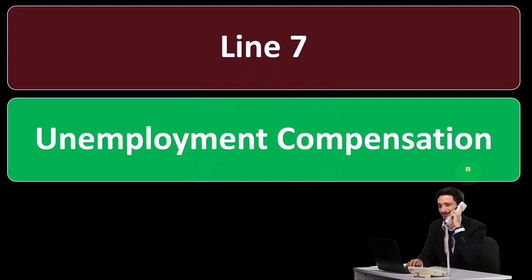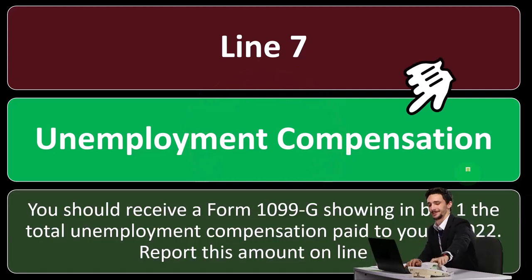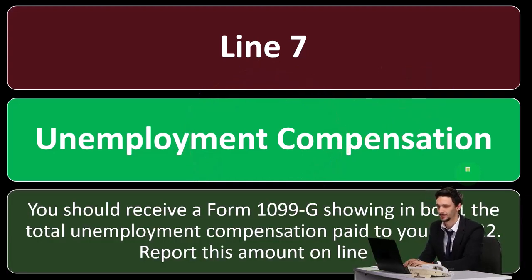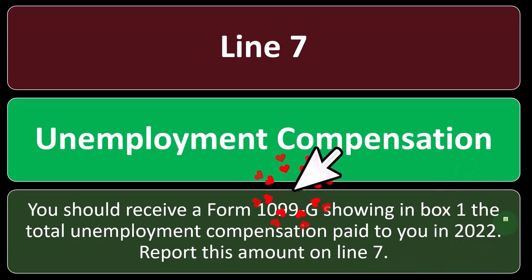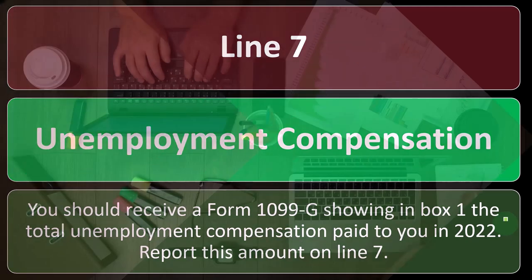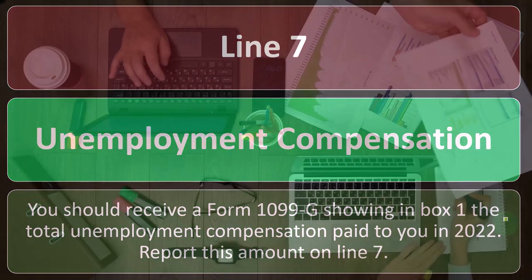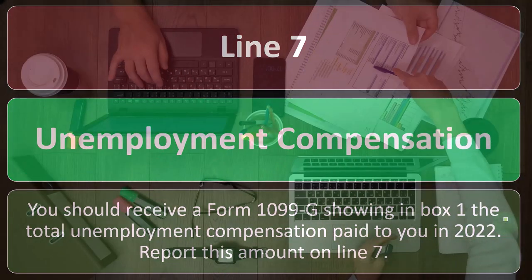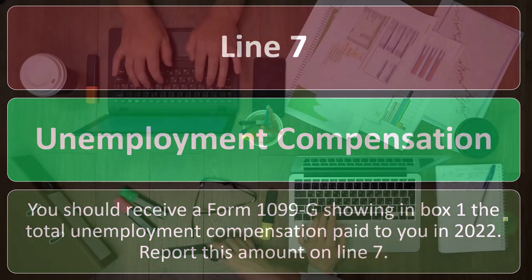Line seven, unemployment compensation: you should receive a Form 1099-G showing in box one the total unemployment compensation paid to you in 2022. Report this amount on line seven. It's usually a pretty straightforward type of thing.